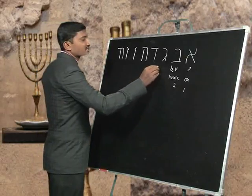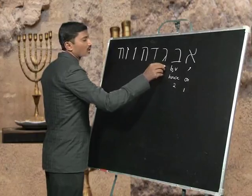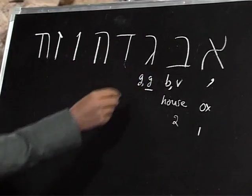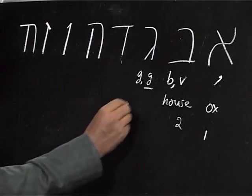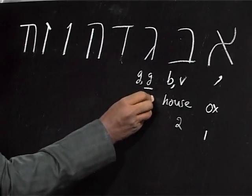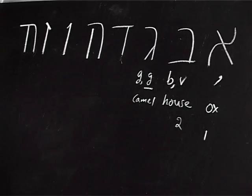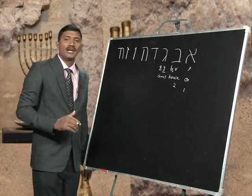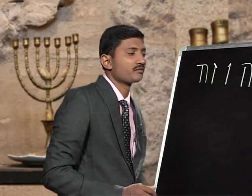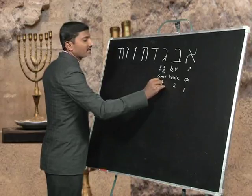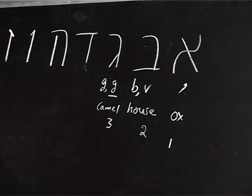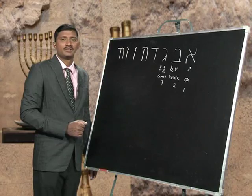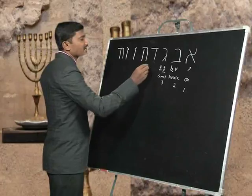The third letter we learned is Gimel, which represents the sound G. The picture we get is the camel, or a foot — a person walking. The numerical value is number 3, and we see it represents the third person in the Trinity, which is the Holy Spirit — the third person in the Godhead.